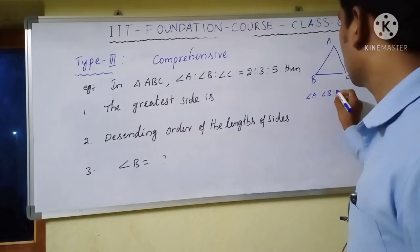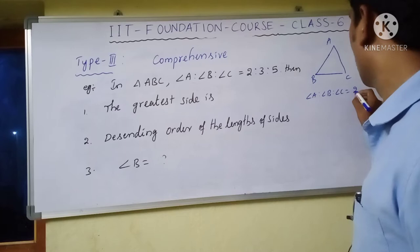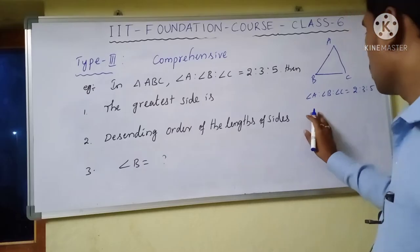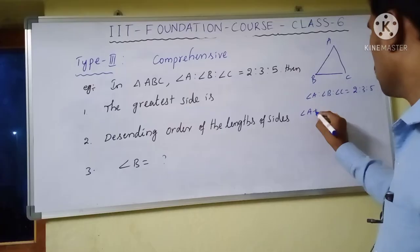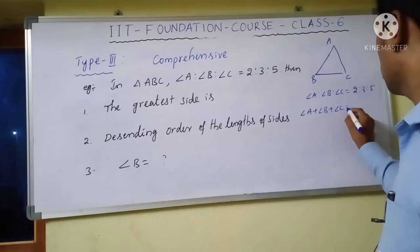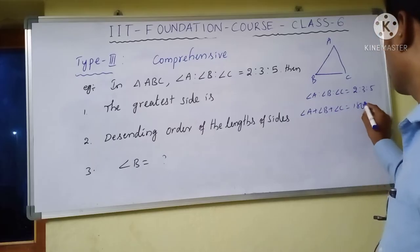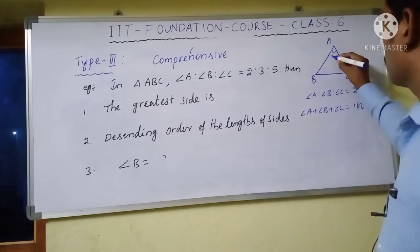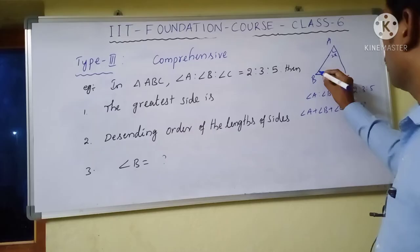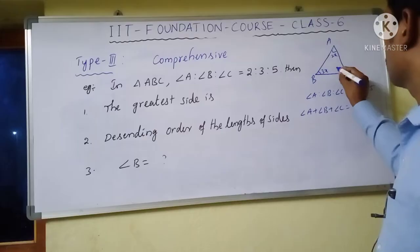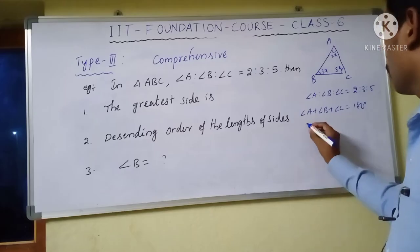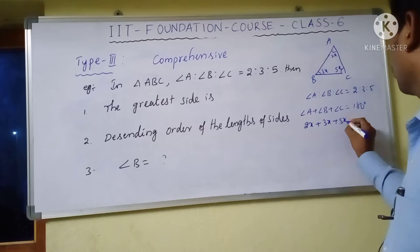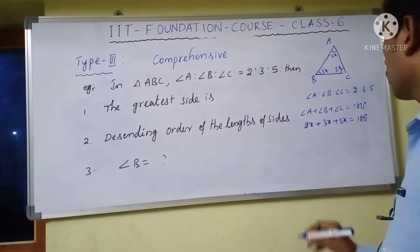The angles of triangle ABC are in the ratio A:B:C = 2:3:5. We know that the sum of the three angles equals 180 degrees: angle A + angle B + angle C = 180°. Let the angles be 2x, 3x, and 5x. So 2x + 3x + 5x = 180°, which gives 10x = 180°, therefore x = 18°.